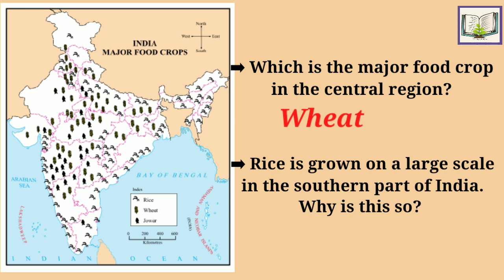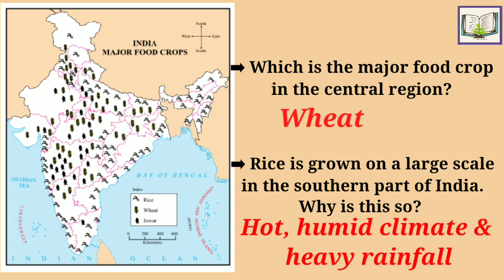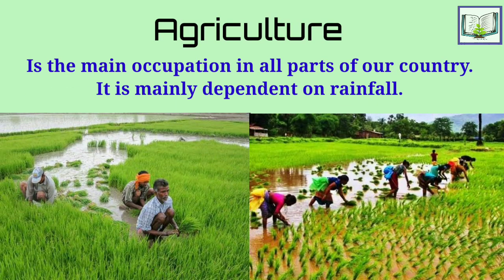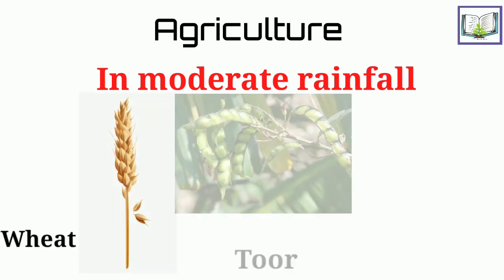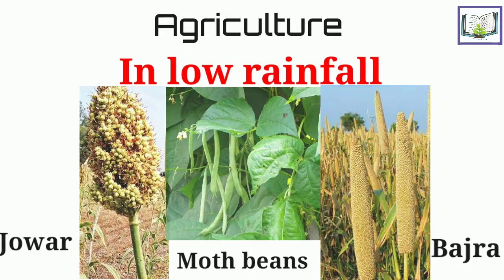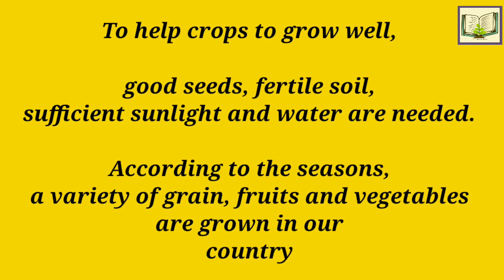Why is rice grown in the south? Rice needs water to grow — it grows in a hot, humid climate and heavy rainfall is required. Agriculture is the main occupation in all parts of our country and is mainly dependent on rainfall. In regions of high rainfall, crops such as rice, coconut, ragi, and virai are grown. In moderate rainfall regions, crops like wheat, toor, and soya beans are grown. In low rainfall regions, crops like jawar, bajra, and moth beans are grown. To help crops grow well, good seeds, fertile soil, sufficient sunlight, and water are needed.